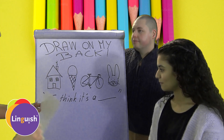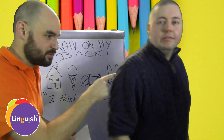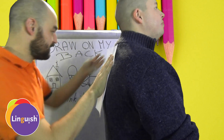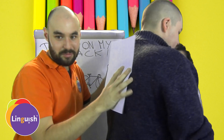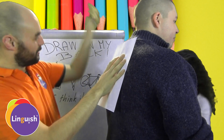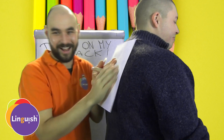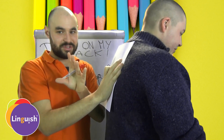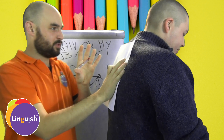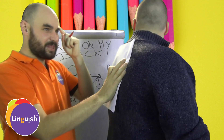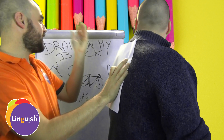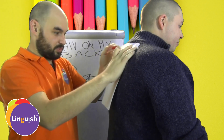So, Rémi, can you turn your back? Yes. Okay. Latifa, come here so you can see. I'm going to draw something. Come here. We're losing Latifa. So, I'll draw something simple. And you have to say, 'I think it's a house.' I think it's a... You'll see.